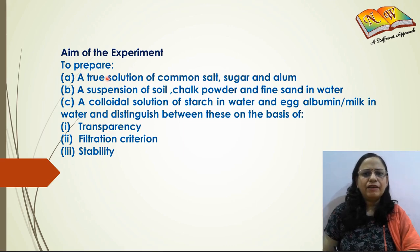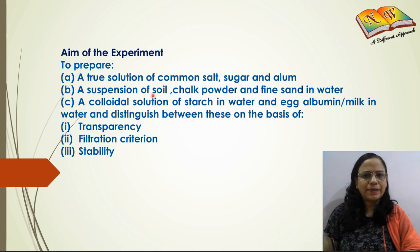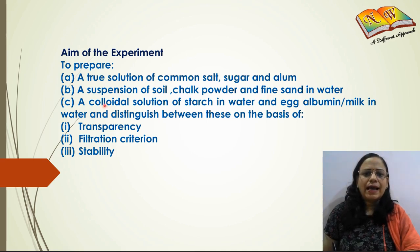In this experiment we will prepare a true solution using common salt in one beaker, sugar in the second beaker, and alum in the third beaker. Then we will prepare suspensions of soil in the first beaker, chalk powder in the second beaker, and fine sand in the third beaker. We will be using water as the solvent.